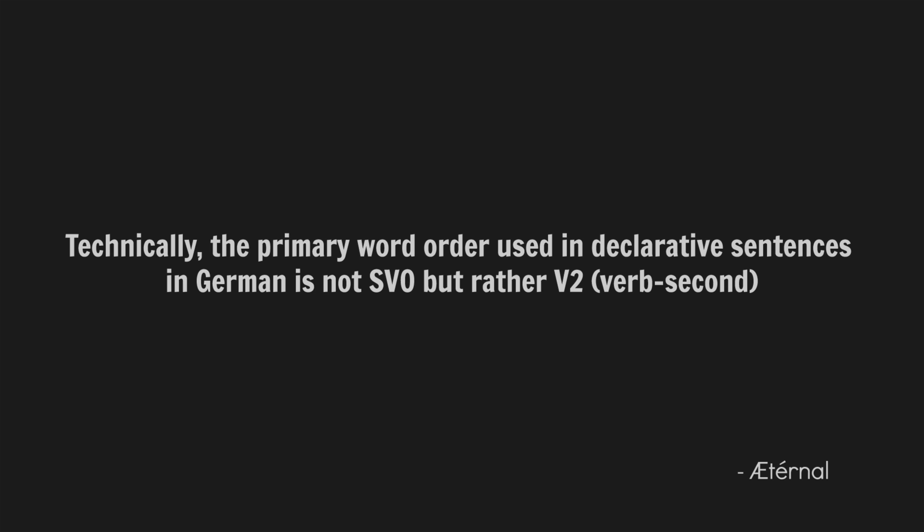Technically, the primary word order used in declarative sentences in German is not SVO, but rather V2 — verb second. That is 100% correct. More on this in an upcoming video.